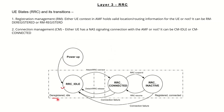Once the user is powered up, it will go to idle mode — RM deregistered and CM idle. Once it goes to connected or inactive mode, it will be converted to RM registered and CM connected mode. If there is no data to be transmitted, it will shift from RRC connected to inactive and then to idle mode.